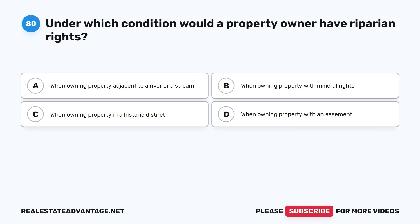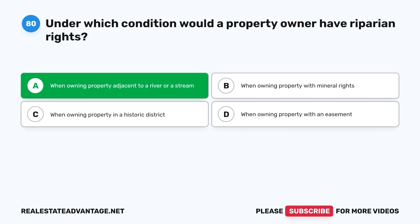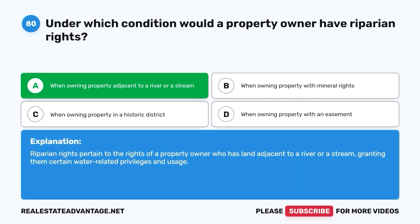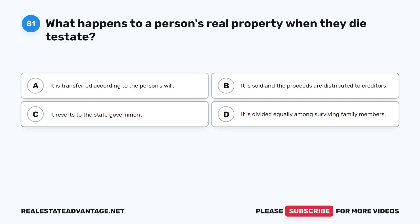Question 80: Under which condition would a property owner have riparian rights? A. When owning property adjacent to a river or stream. B. When owning property with mineral rights. C. When owning property in a historic district. D. When owning property with an easement. The correct answer is A. Riparian rights pertain to the rights of a property owner who has land adjacent to a river or stream, granting them certain water-related privileges and usage.